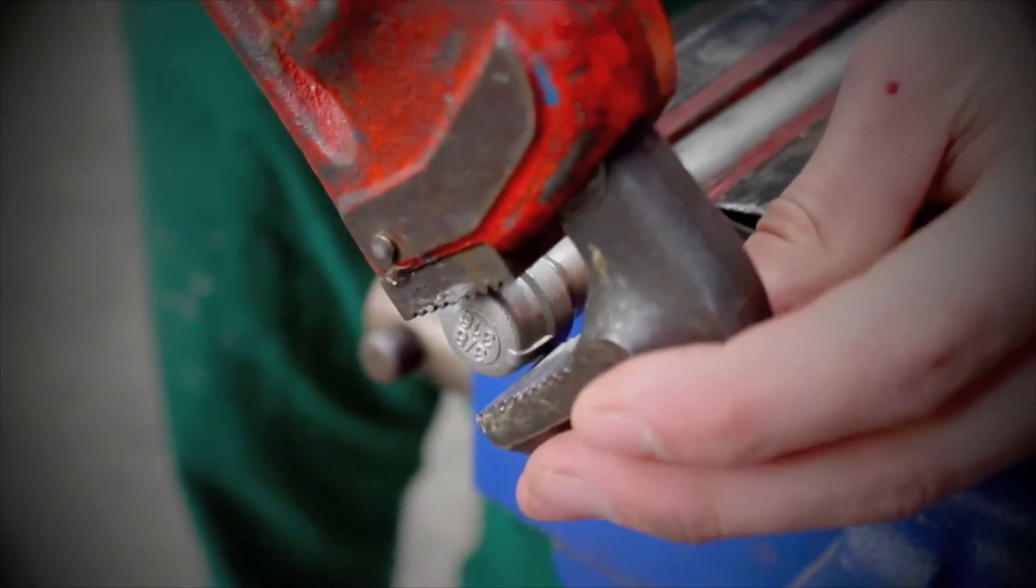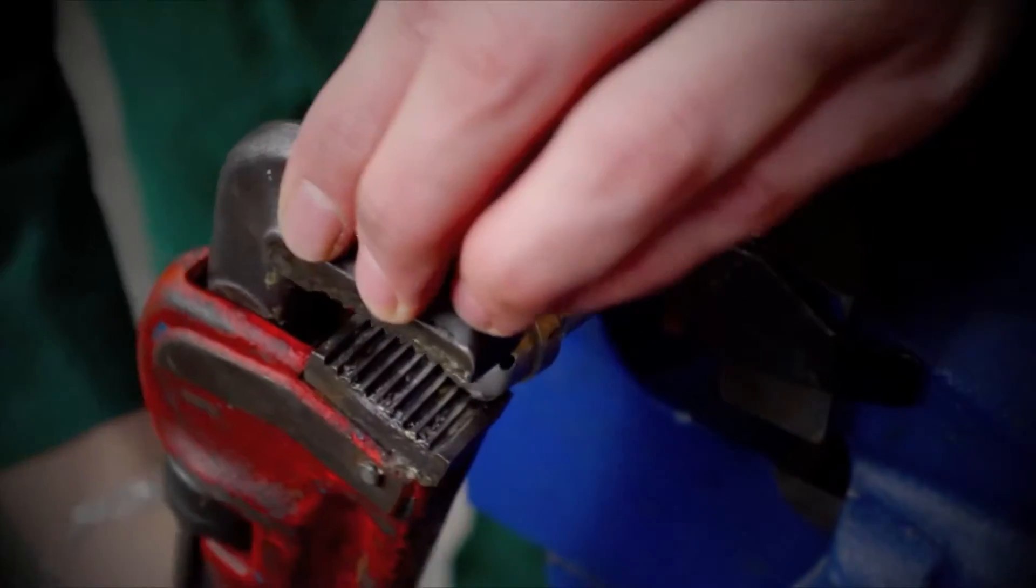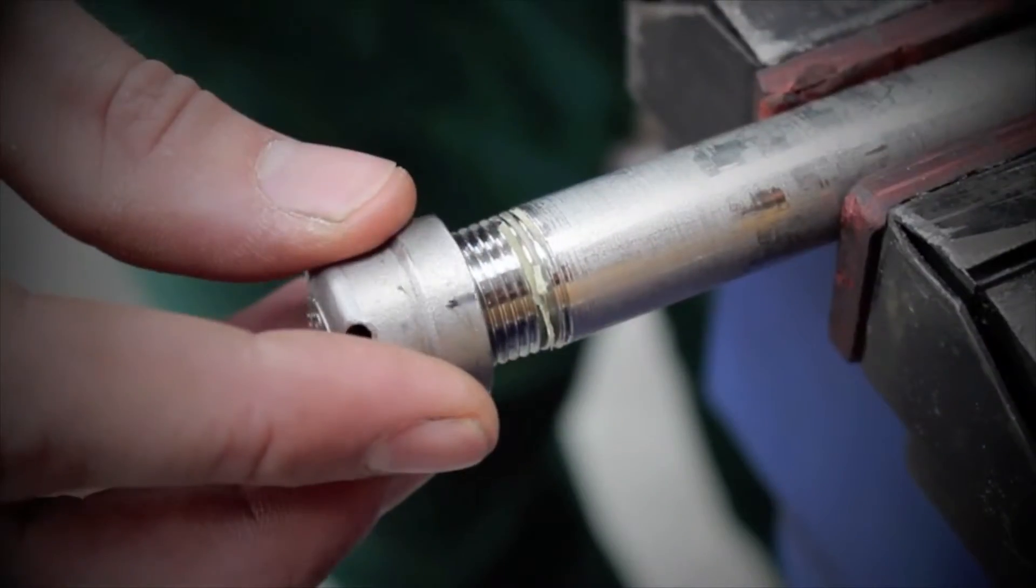Whilst the feeder pipe assembly is in the vise, using Stilsons, remove the end cap by rotating anti-clockwise.